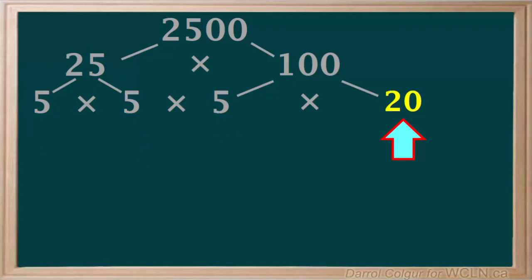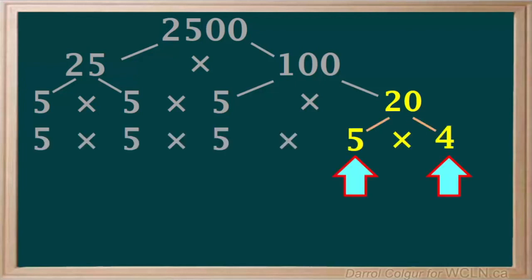One way is to break it down into 5 times 4. So we'll write 20 as 5 times 4. The 5 is a prime number and cannot be divided anymore.